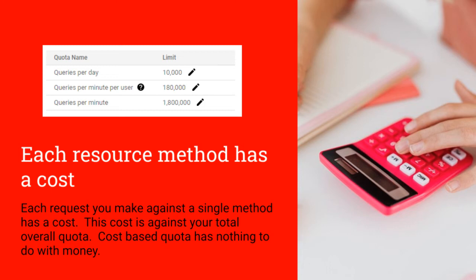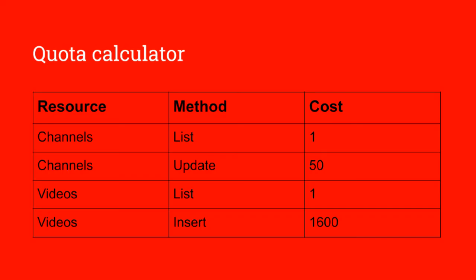It is a good idea to check the quota calculator and familiarize yourself with the different request costs. I have left a link in the description below to the YouTube API quota cost calculator. Each resource and method within the API has a different cost. Things like list tend to only cost one, whereas updates will cost you around 50. As you can see, uploading a video will really eat your quota, costing a whopping 1,600 quota points.